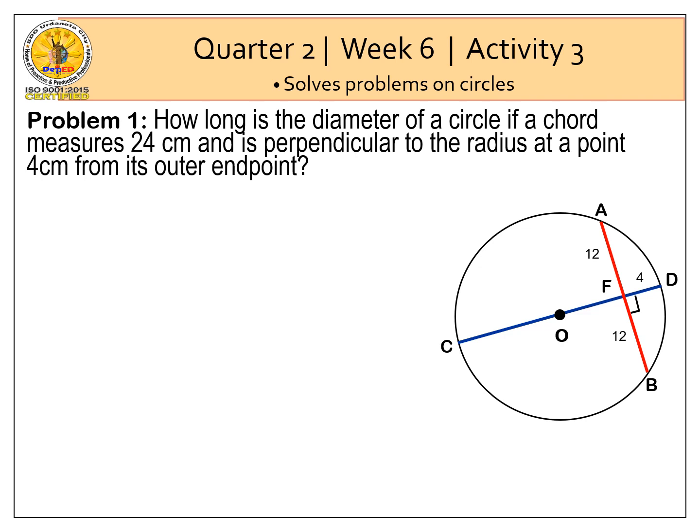So we will apply the chord product theorem. Then we have this equation. The product of the segments of one chord is equal to the product of the segments of the other chord. So AF times FB is equal to CF times FD. Substituting the values, we have 12 times 12 is equal to CF, which is unknown, times 4.